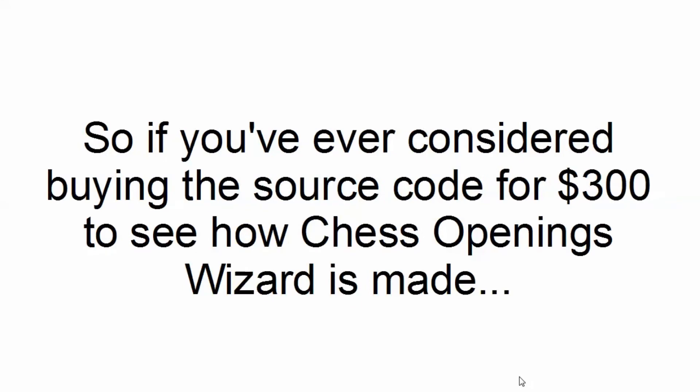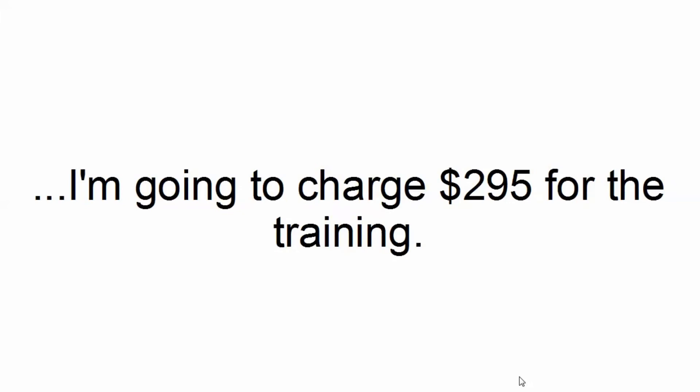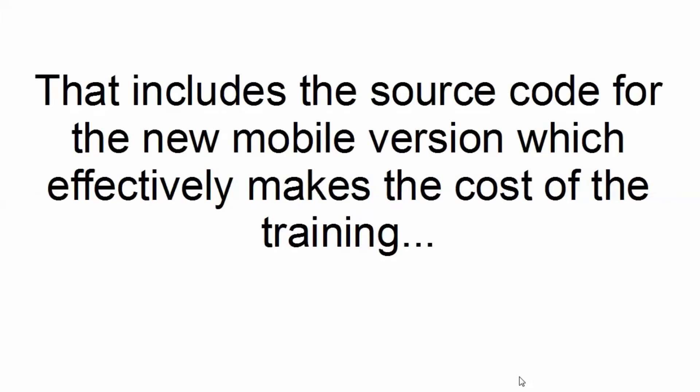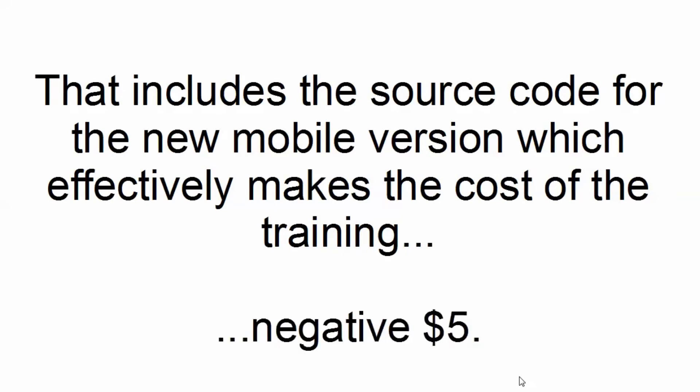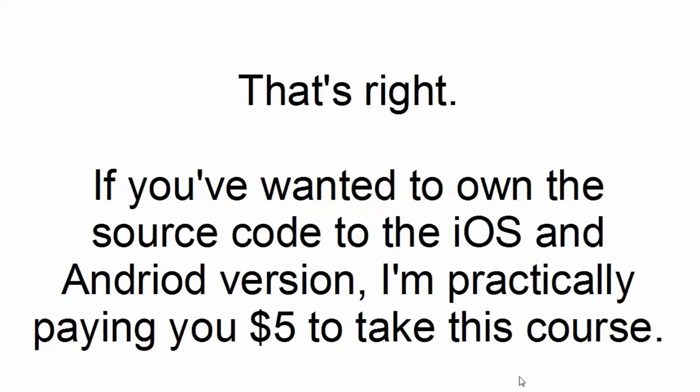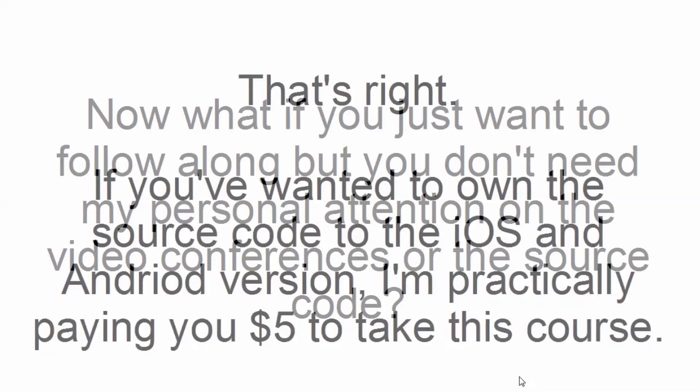If you've ever considered buying the source code for $300 to see how Chess Openings Wizard is made, I'm going to charge $295 for the training. That includes the source code for the new mobile version, which effectively makes the cost of the training negative $5. That's right — if you wanted to own the source code to the iOS and Android versions, I'm practically paying you $5 to take this course.